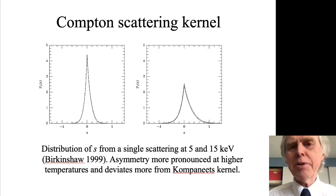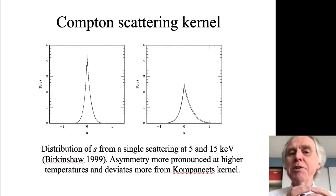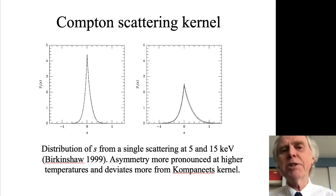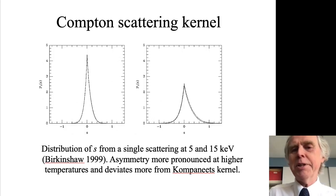If I calculate that averaging over all electrons in a population of electrons at 5 keV on the left, 15 keV on the right, you get a very symmetrical pattern at about 5 keV, a rather asymmetrical pattern at 15 keV. That asymmetry becomes even more pronounced at higher temperatures. We say that the shape is deviating from the so-called Kompaneets kernel, which is the scattering expression derived from the Kompaneets equation that was first derived in the 1940s.